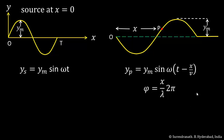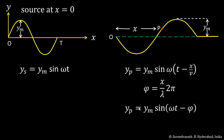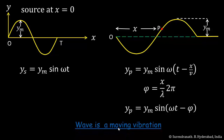Alternatively, the oscillations at P differ in phase by (x/λ)·2π. Recall that for every lambda traveled by the wave, phase drops by 2π. So a particle P at distance x from O has oscillations with a phase difference of (x/λ)·2π. You can write the equation for oscillations of P as yp = ym sin(ωt − φ), where φ is the phase difference. This shows the wave as a moving vibration — vibrations at farther points take place later.